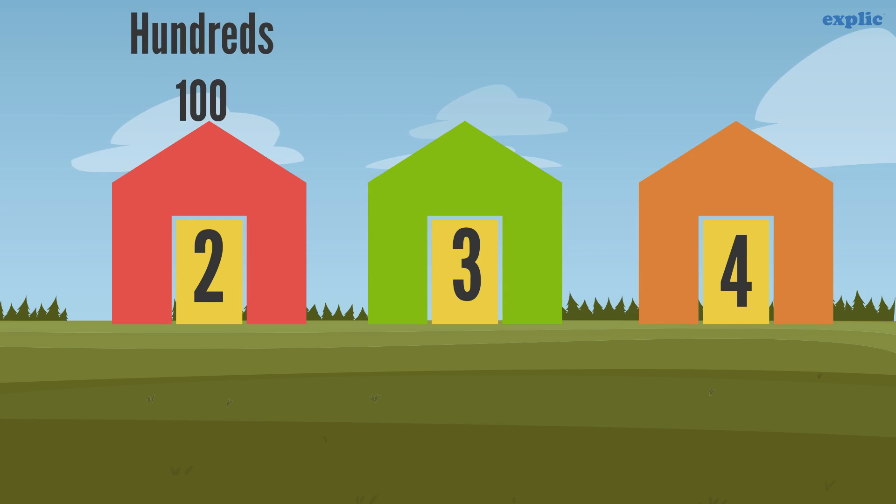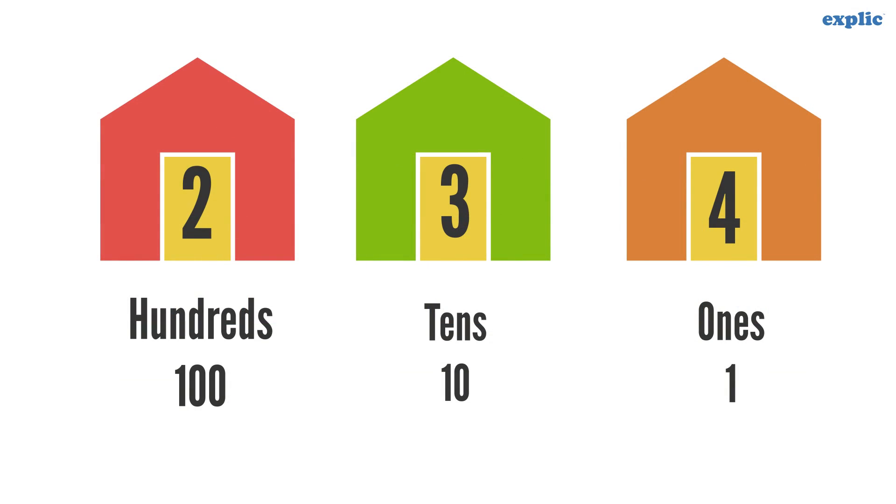Two is in hundreds place, three is in tens place and four is in ones place. It can also be shown in a tabular form.